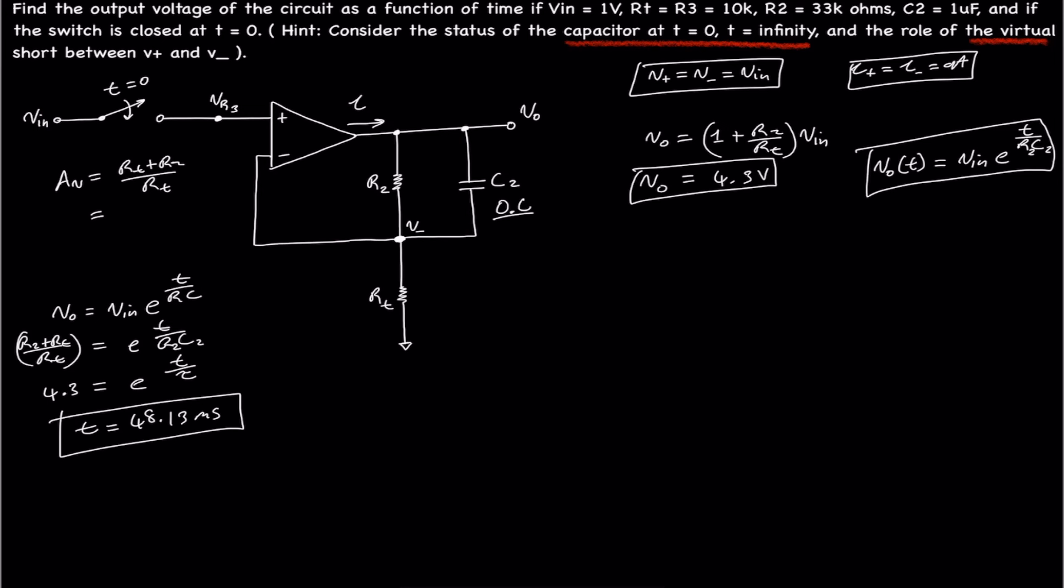So, here, when t is 48.13 milliseconds, Vout is at its maximum. We then can look at this graphically, by stating Vout versus time. We know at t equals zero, 1 volt. We know the capacitor is charging. So, we know that t equals 48.13 milliseconds.